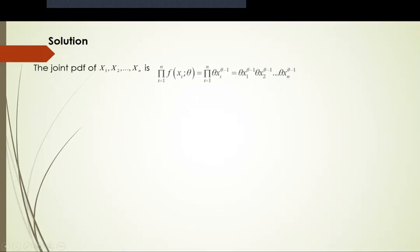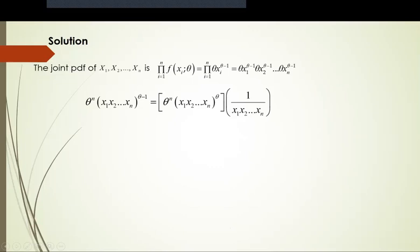The joint PDF of x1, x2, ..., xn is given as the product of f(xi|theta), which is the product of theta * xi^(theta - 1). Expanding the formula, we get theta*x1^(theta-1) * theta*x2^(theta-1) * ... * theta*xn^(theta-1). Simplifying, this becomes theta^n times the product of (x1 * x2 * ... * xn)^(theta - 1). We then split this into two parts: one part depending on theta, and the other not depending on theta.